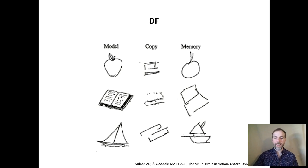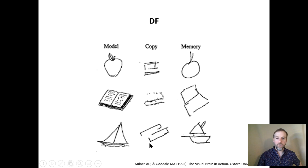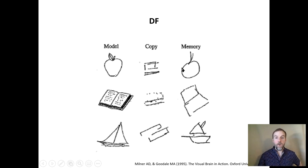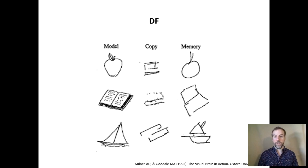If we show DF pictures of an apple, a book, and a sailboat, she says she doesn't know what they are. She can draw, but her drawings aren't good because she doesn't know what she's looking at, and if you don't know, it's hard to copy. Proof that she still has long-term memory of objects: if we say 'think of an apple and draw it' without a model, she can do that because her memory is intact. She's only bad at copying because she doesn't know what she sees.